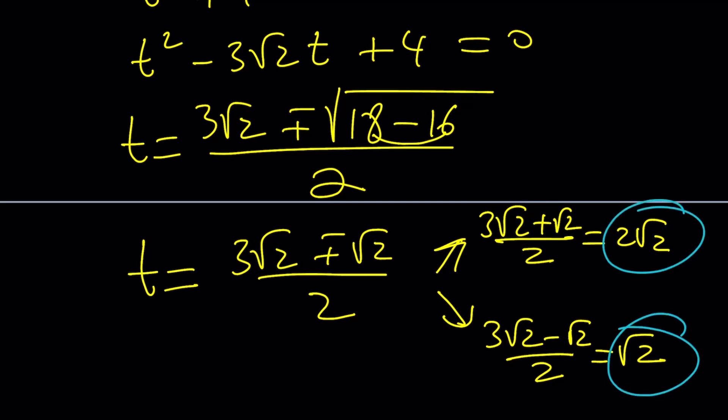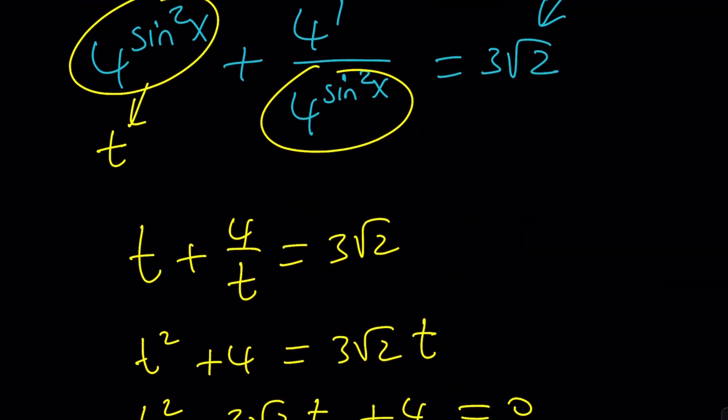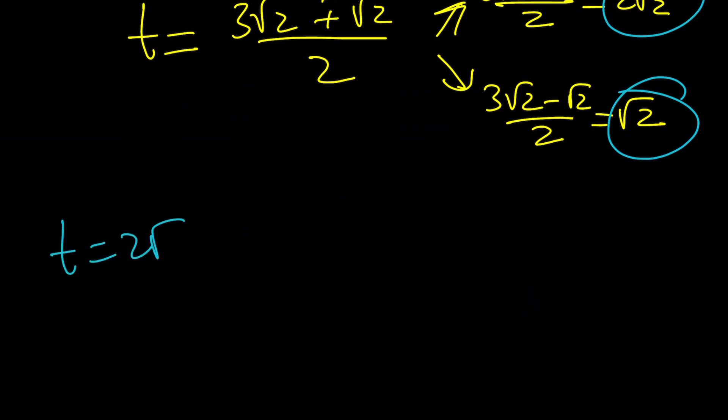And from here we can find the x values. What is t? We've got to back substitute. And t is 4 to the power sine squared x. And if I included the graph, I'd like to show you. So t is equal to 2 root 2, which can be written as 4 to the power sine squared x. This is where things kind of get interesting because we're going to delve into exponentials. But 2 root 2 is a power of 2.